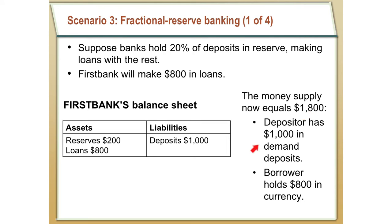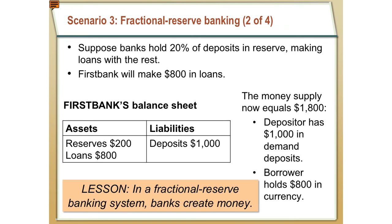Why does the money supply increase to $1,800? Because the depositor still has $1,000 they can use for purchases — they could write a check for $1,000. And now the bank has lent $800 to another person, so this borrower also has $800 they can use to purchase something. That $800 is additional resources that can be used to complete a transaction, and that's what money is — an asset that can be used to complete a transaction. The key lesson: in a fractional reserve banking system, banks create money through the lending process.